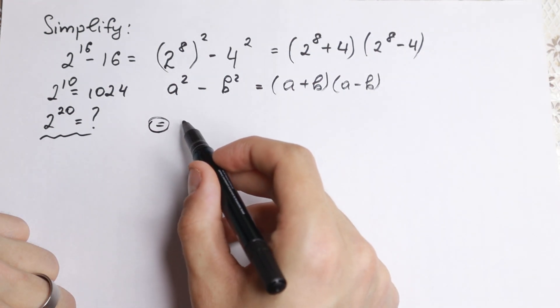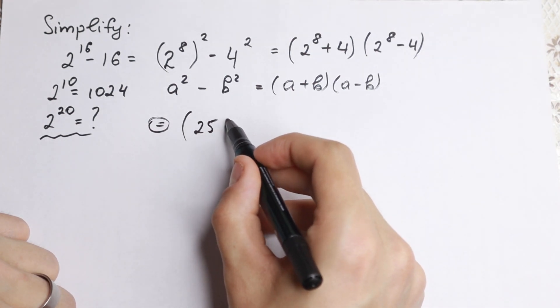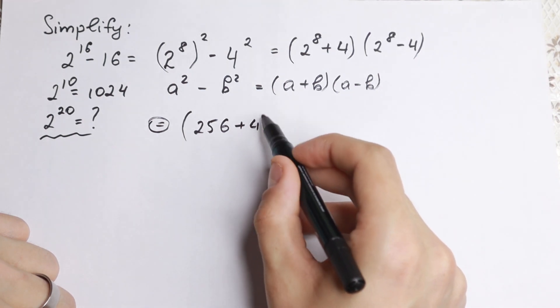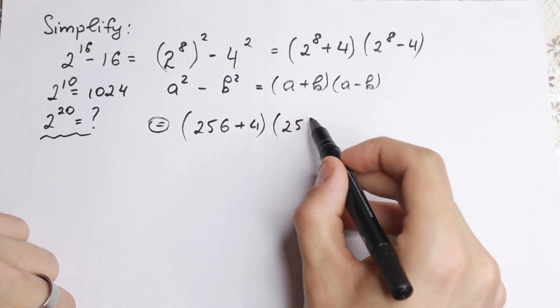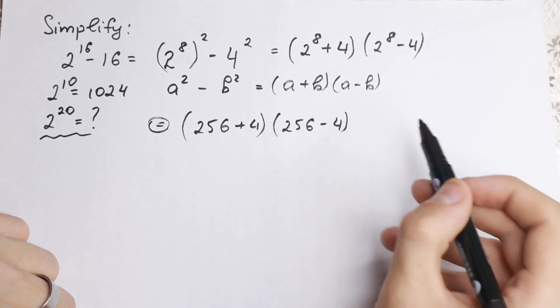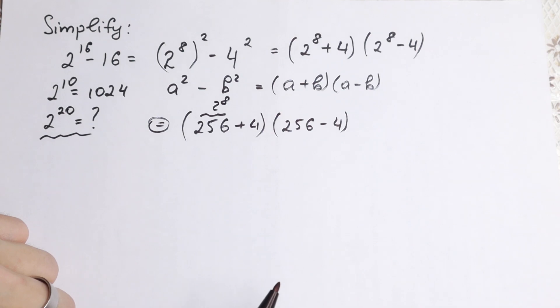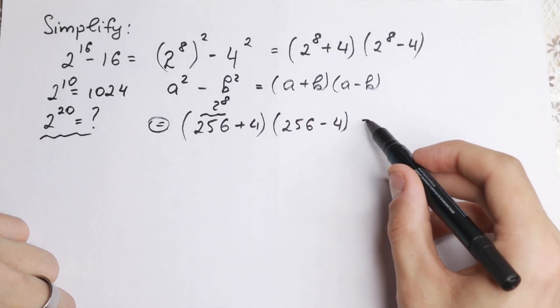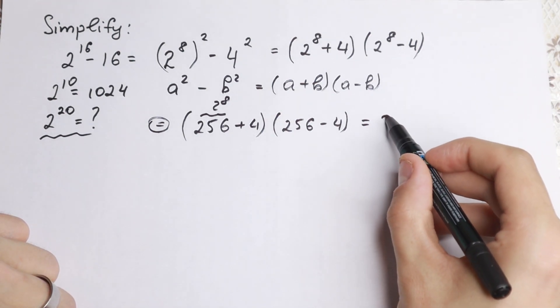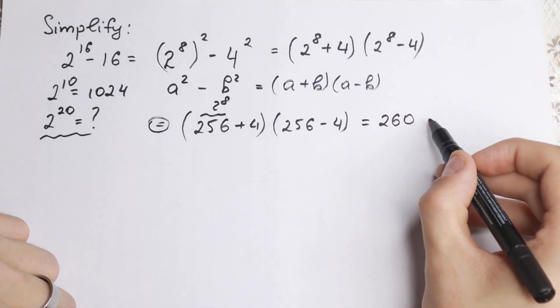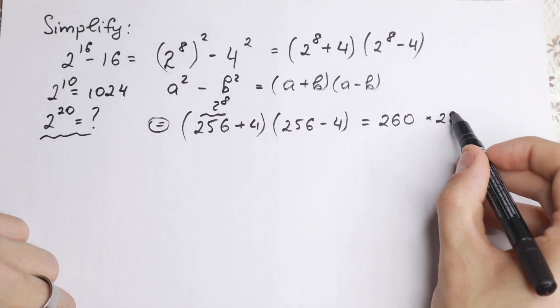So as a result, we have two parentheses: 256 plus 4 times 256 minus 4. I hope you understand this step. This is the same as 2 to the 8th power. How can we work with this? Of course, let's add it. We have 260 times 252.